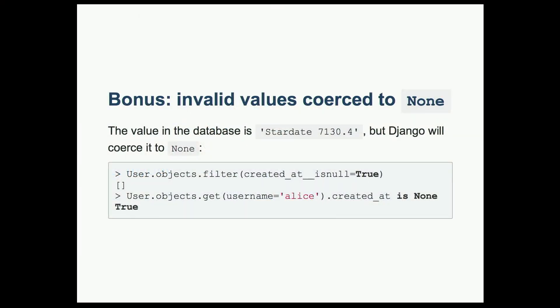Because the first line, when you're querying is null, that's run on the database, and the database doesn't think created at is null. But then when you load it, Django treats it exactly like it were null.